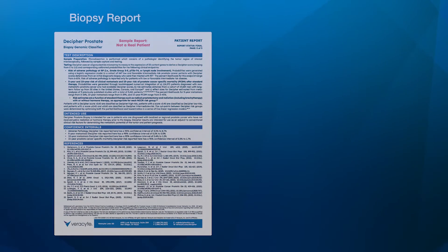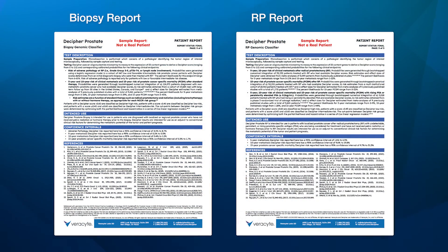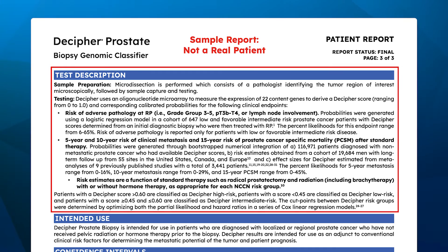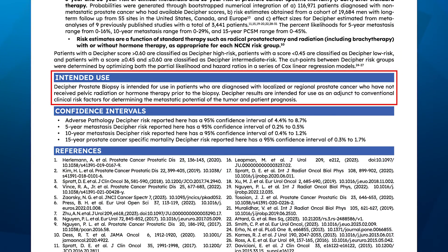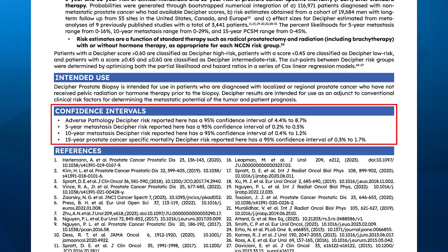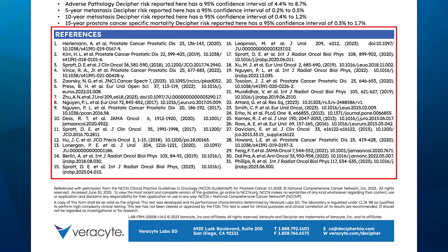The last page of the report contains the technical details of how the Decipher prostate test is performed, how the risk estimates shown on page 1 were calculated, the intended use of the test, and the confidence intervals around the patient risk estimates displayed on page 1. Finally, all the references are included at the bottom of the page.